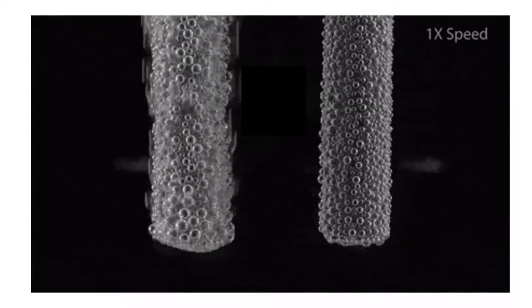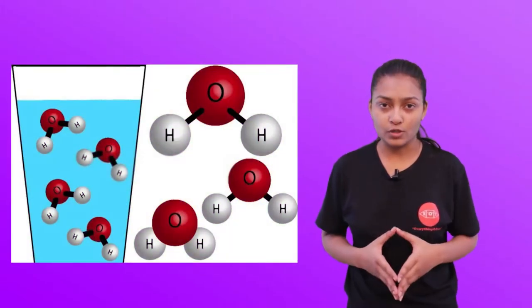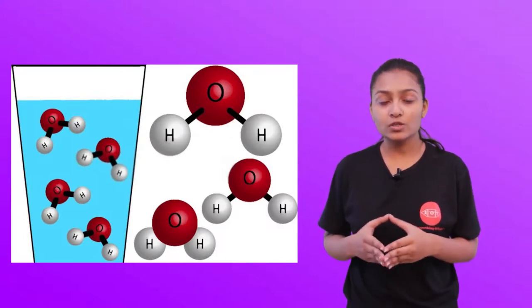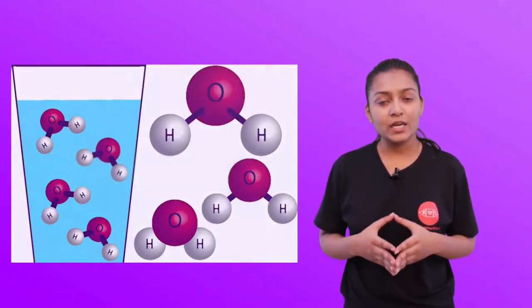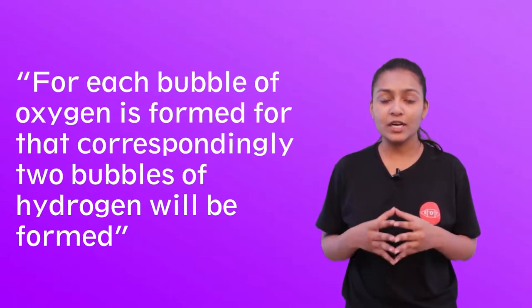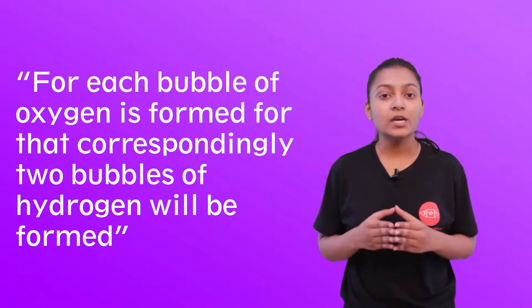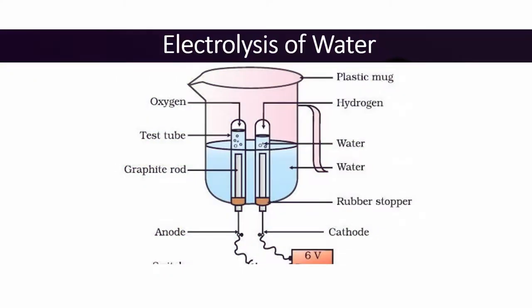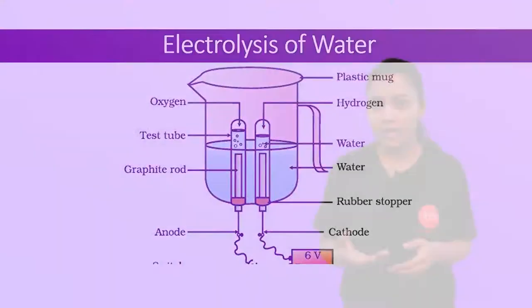You must have observed that both test tubes consist of bubbles, but the number of bubbles in one test tube is more than in the other. Why is this happening? Water contains two atoms of hydrogen and one atom of oxygen. So for every atom of oxygen, two atoms of hydrogen are formed. If one bubble of oxygen is formed, correspondingly two bubbles of hydrogen will be formed. That is why there are more bubbles in one test tube and fewer in the other. Now let us try to understand the third agent, which is sunlight.